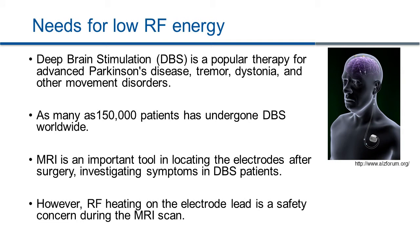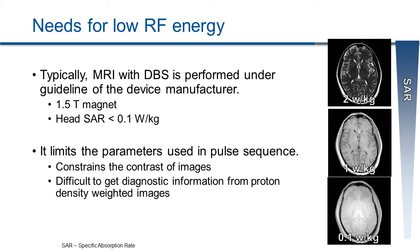There are many reasons to reduce the RF energy in MR scans. Here I use Deep Brain Stimulation (DBS) as an example. DBS is a popular therapy for advanced Parkinson's disease or other movement disorders and is getting more and more popular. MR is an important tool in locating electrodes after surgery and investigating symptoms in patients implanted with DBS. However, RF heating on the leads is a safety concern during MR scans. Typically, DBS manufacturers suggest using SAR less than 0.1 watts per kilogram to scan patients with the device at 1.5 tesla.